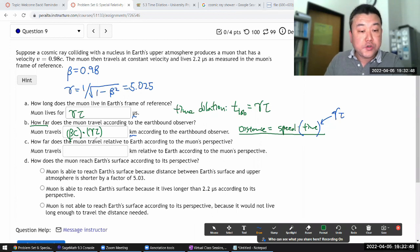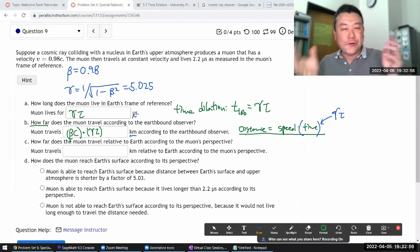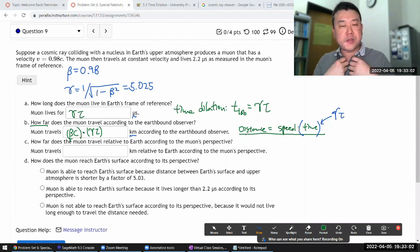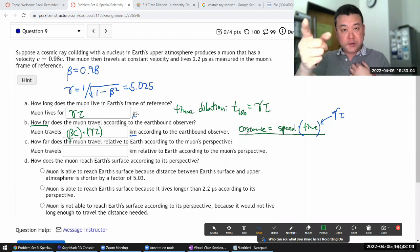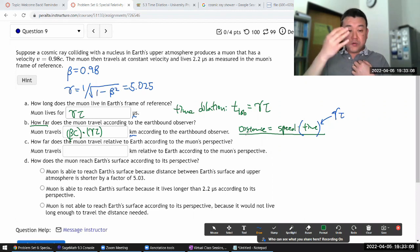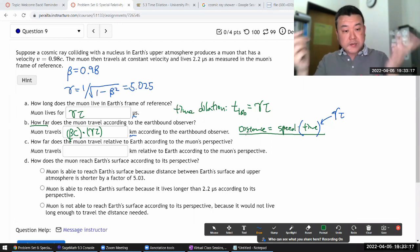How far does the muon travel relative to Earth according to the muon's perspective? Sorry, that's a very convoluted way of asking. But if you imagine you're the muon, then you're not the one that's moving. It's the Earth that's moving towards you. And as the Earth is moving towards you, you could describe it as how far you move relative to the Earth. So for that scenario, so the situation of a muon and Earth, it's symmetric.